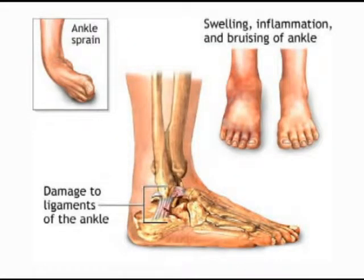An ankle sprain is the most common athletic injury, and there are varying degrees of ankle sprains. We grade them one through three, and it depends on the severity of the instability, the severity of the tissue trauma. The majority will respond to ice, bracing, and some physical therapy.